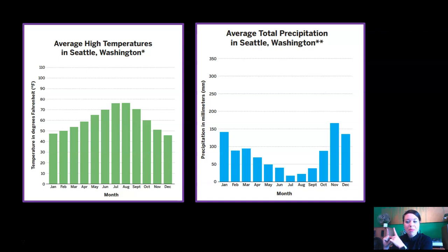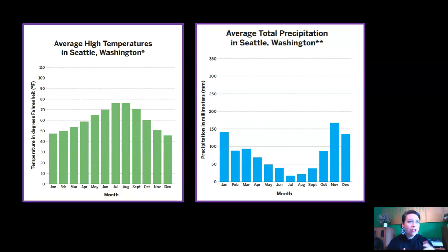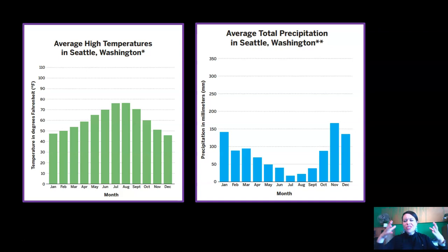These are the two temperature graphs we saw for the climate of Seattle in the last lesson. The green one shows average high temperatures in Seattle, Washington, and the blue one shows average total precipitation in Seattle, Washington. Remember, these graphs aren't from a specific year like 1989 or 2001. They're made from average data — scientists looked at years and years of data to find the average temperature and precipitation for each month.